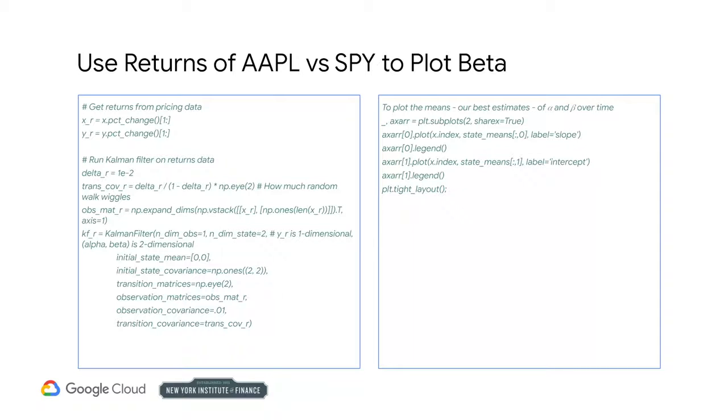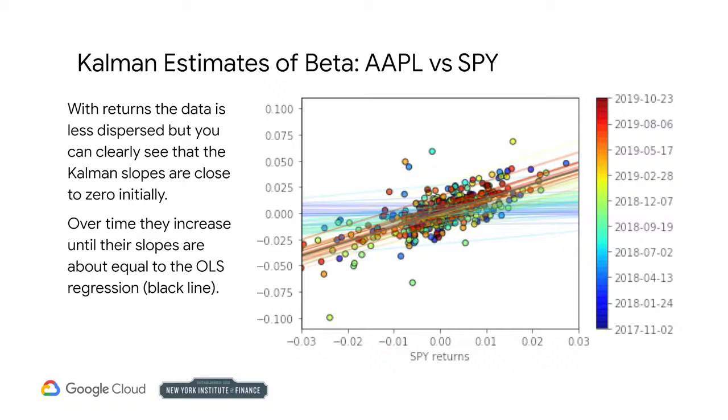Once again, we only plot every fifth estimate in order to minimize clutter. Although the raw data is much more jumbled here, we can see the regression line evolving. The estimate of beta increases gradually from around zero to about the same as the ordinary least squares regression shown by the heavier black line.